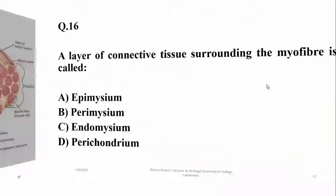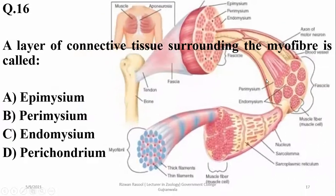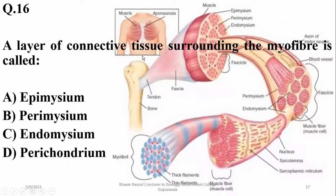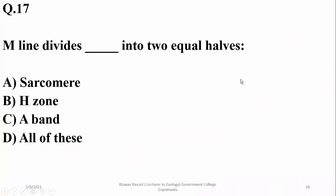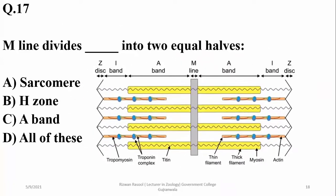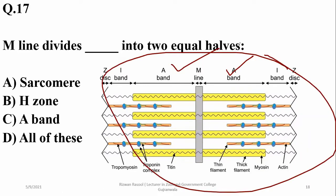A layer of connective tissue surrounding the myofiber is called endomysium; it surrounds muscle cells. Perimysium surrounds the muscle bundle, and epimysium surrounds the complete muscle. So the answer is charlie. The M-line divides each zone, the A-band, and the complete sarcomere into two equal halves. The right option is delta.